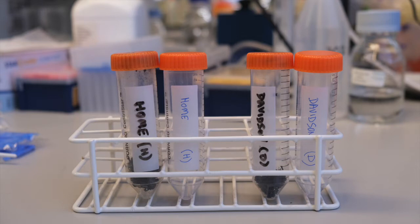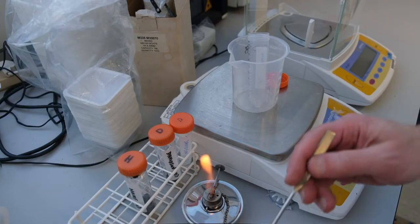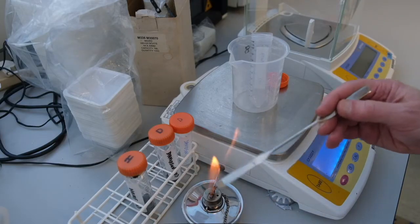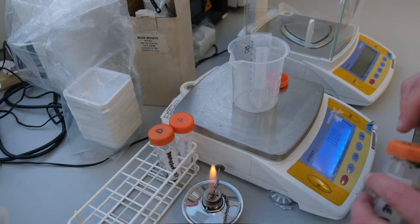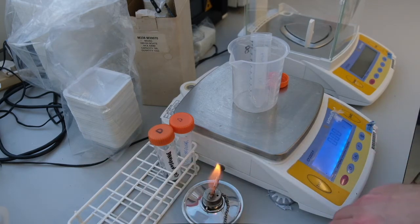We will now transfer a small sample into fresh sterile tubes. Using a sterile spatula, we can transfer into pre-weigh tubes and this way record the exact weight of each soil sample used.